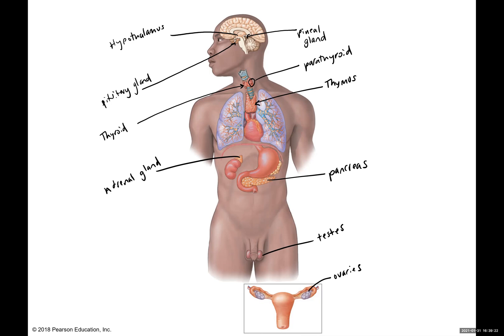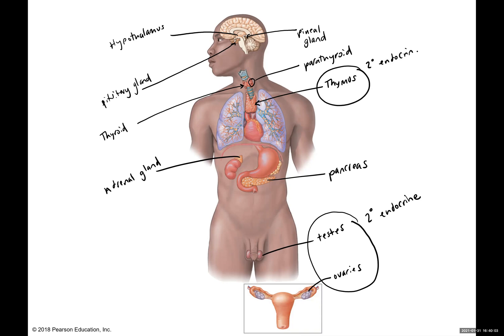Most of these glands are considered primary endocrine glands, which means their primary job is to produce hormones. But we do have a few that are secondary endocrine. The gonads have the primary job of making either sperm cells or egg cells, and the production of hormones is secondary to that. The thymus is also classified as a secondary endocrine gland because it will atrophy in adulthood. We'll be talking more about the thymus when we cover the lymphatic system.